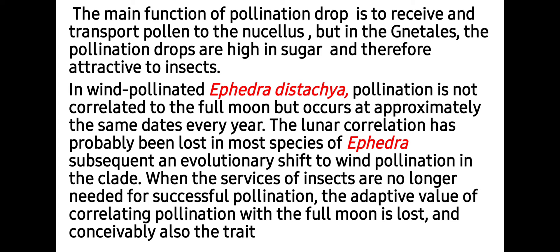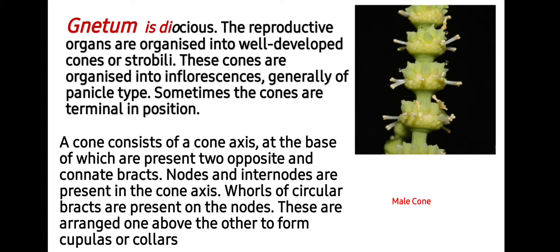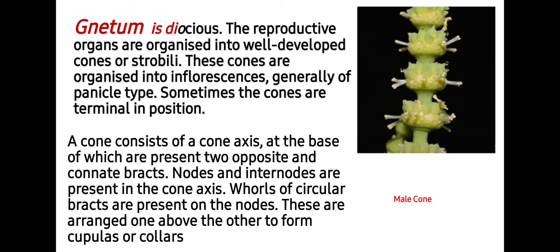Next is pollination in Gnetum. Gnetum is dioecious. The reproductive organs are organized into whorled cones or strobili. These cones are organized into inflorescences, generally of panicle type; sometimes the cones are terminal in position. Due to their arrangement in the inflorescences they are quite often named as flowers. In Gnetum, a cone consists of a cone axis at the base, with two opposite and connate bracts. Nodes and internodes are present on the cone axis, and whorls of circular bracts are present on the nodes.